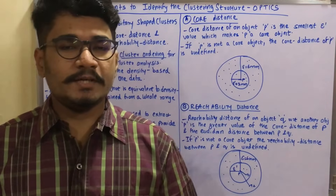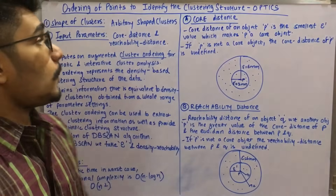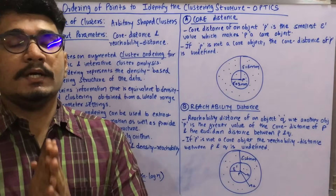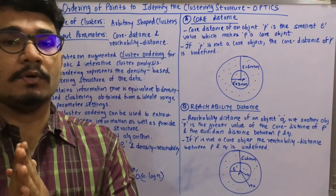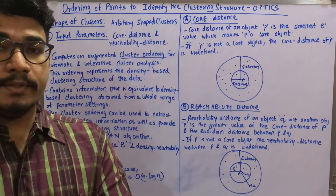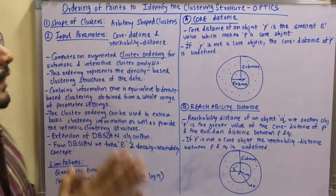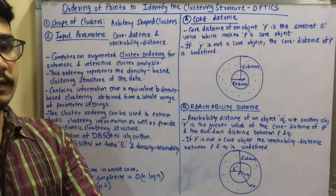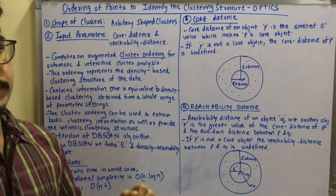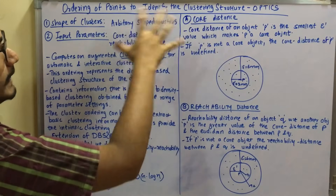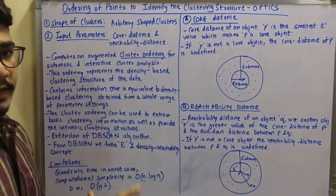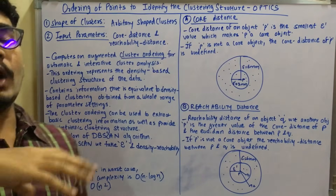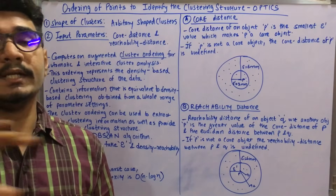Welcome to another video on data mining. Today we'll be looking at OPTICS — Ordering of Points To Identify the Clustering Structure. It is a clustering technique based on density-based methods. Our main objective is to identify the clustering structure based on how the data points are ordered in a particular fashion.